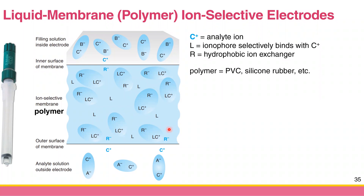Another component needed in the selective membrane is R. R stands for hydrophobic ion exchanger. Why does it have to be hydrophobic? Because you need to embed it in the polymer, and if it's hydrophilic, it may dissolve out of the membrane and you lose stability. So R must be hydrophobic.